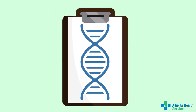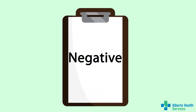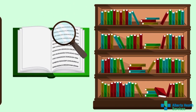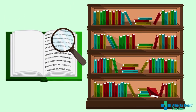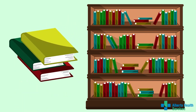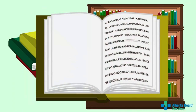A second possibility is that the test does not find anything. This is called a negative or an uninformative result. Remember, exome sequencing only looks through the books or genes we understand the best in the library. So, it is possible that some genetic causes are not found by exome sequencing.